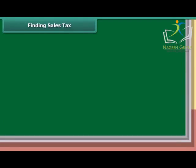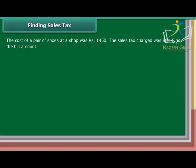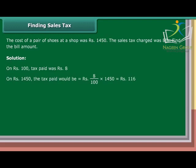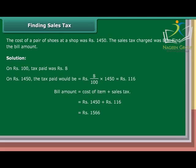Finding Sales Tax: The cost of a pair of shoes at a shop was Rs. 1,450. The sales tax charged was 8%. Find the bill amount. Solution: On Rs. 100, tax paid is Rs. 8. On Rs. 1,450, the tax paid would be Rs. 8 upon 100 into 1,450, which equals Rs. 116. Bill amount equals cost of item plus sales tax, which is Rs. 1,450 plus Rs. 116, which equals Rs. 1,566.